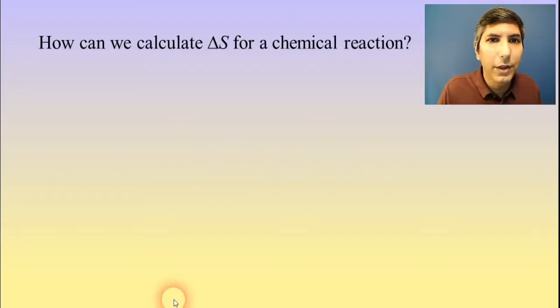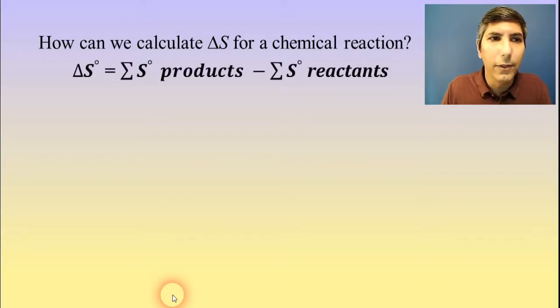So the way we calculate delta S for a chemical reaction looks like this. Delta S of a reaction equals the sum of all the individual entropies of the products minus the sum of the entropies of the reactants. Now if this looks familiar to you, that's good. Way back in our thermodynamics unit, which I believe was unit 6, we learned something very similar but for delta H. And we said that delta H is the sum of the enthalpies of formation of the products minus the sum of the enthalpies of formation of the reactants. It works the exact same way except we're going to use S or entropies for this.